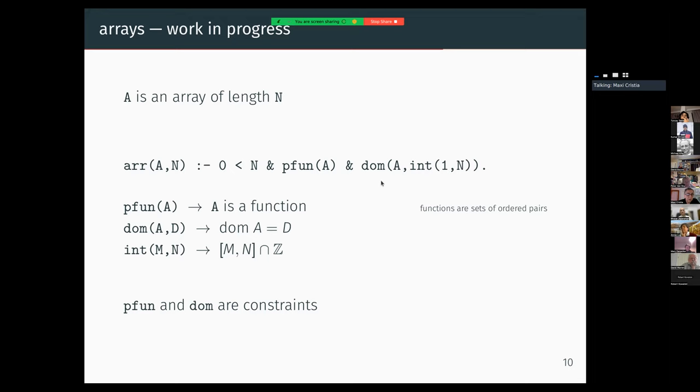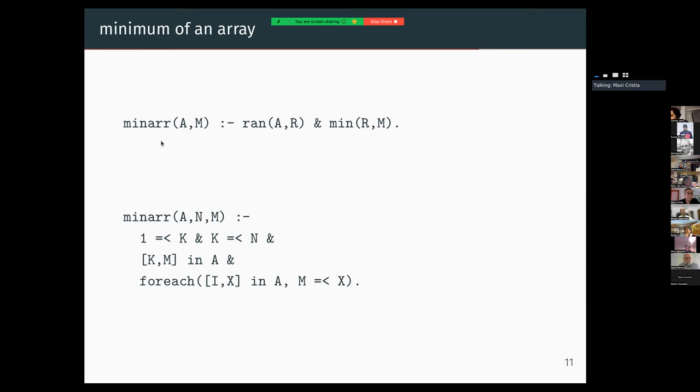All of these (pfun, dom, and int) are constraints in the language. Int is a set term representing the integer interval from M to N. In this way we can define the minimum of an array, basically taking the range of the array and then computing the minimum of that set.